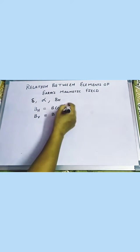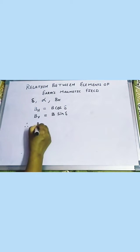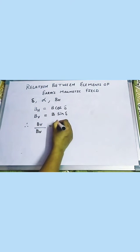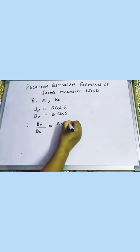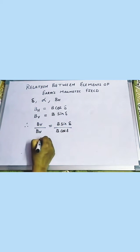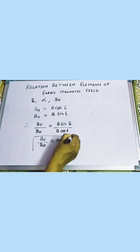We are going to find the relation. Therefore, B vertical upon B horizontal, for finding the relation, we find B sin del upon B cos del. We found that BV upon BH is equal to sin theta upon cos theta, which is tan del.